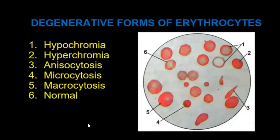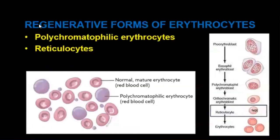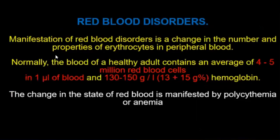Red blood cells may contain different pathological inclusions: Howell-Jolly bodies, Cabot rings, and Heinz bodies. Degenerative forms of erythrocytes include hypochromia, anisocytosis, microcytosis, macrocytosis. Regenerative forms include polychromatophilic erythrocytes and reticulocytes.